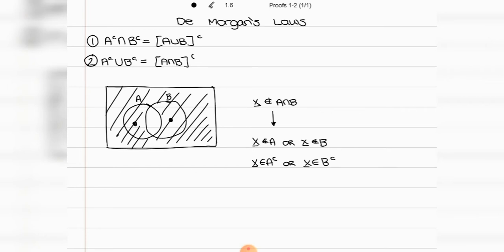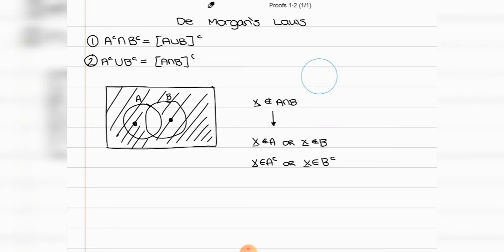A lot of people get confused by the fact that we're talking about an intersection, which intuitively might make you think you should use 'and' here, but it actually has to be 'or.' It helps to understand by looking at the drawing. The idea is that we're saying it's not in both at the same time, so it's definitely not in one of them — it doesn't necessarily have to be out of both A and B individually.